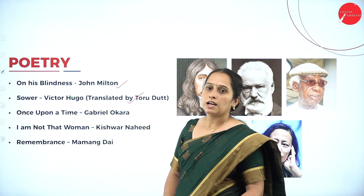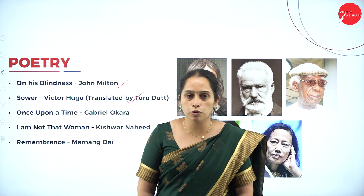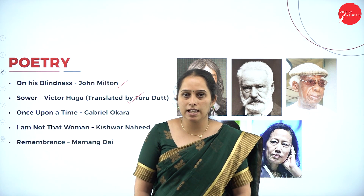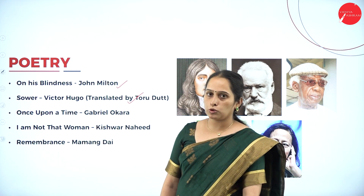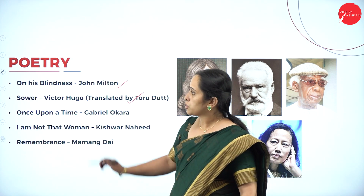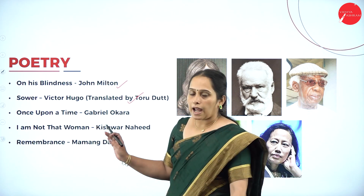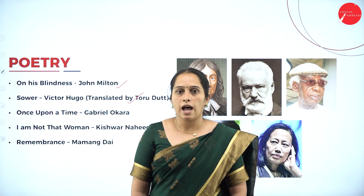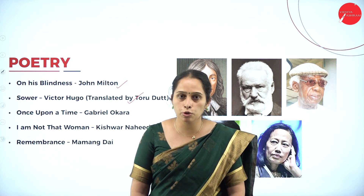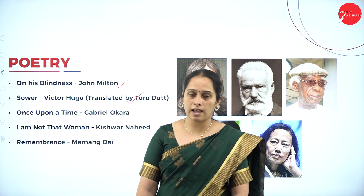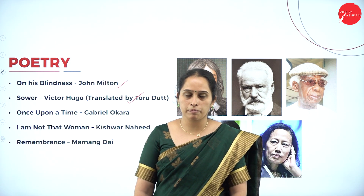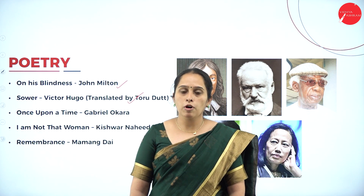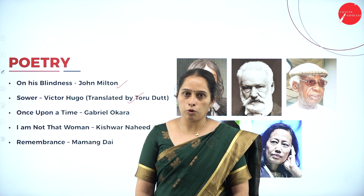The second poem is Sower, written by Victor Hugo, a French poet and novelist, and translated by Toru Dutt. Sower refers to the farmer. This poem is about the struggle of a farmer and his firm determination in doing whatever he can even when others go away. The theme of this poem revolves around hard work and hope.